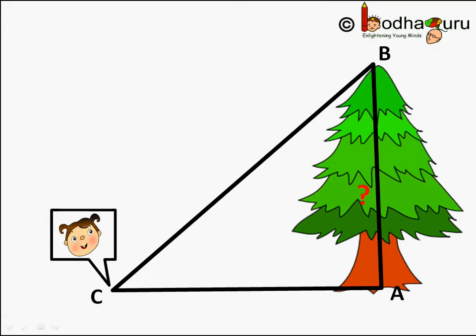Say you are looking at the top of the tree from point C on the ground. The line CB drawn from your eyes to the top of the tree is the line of sight.